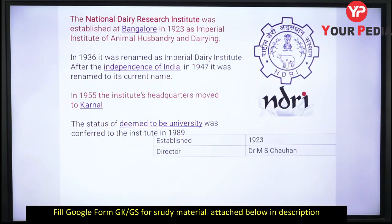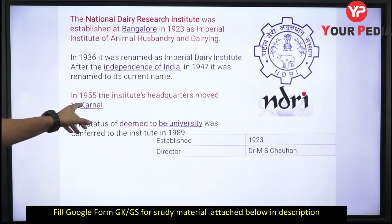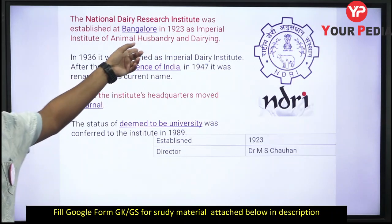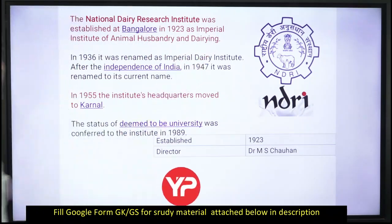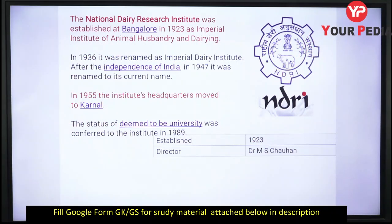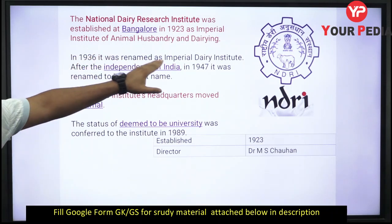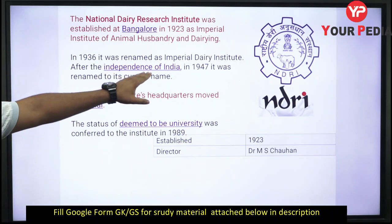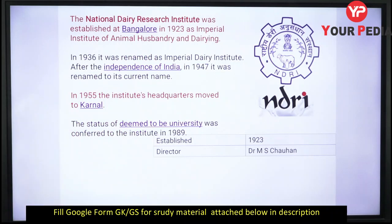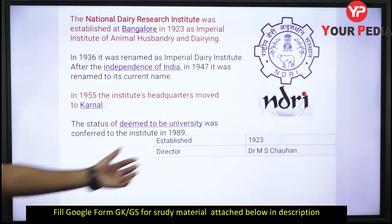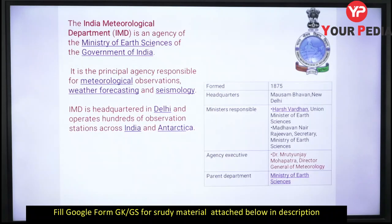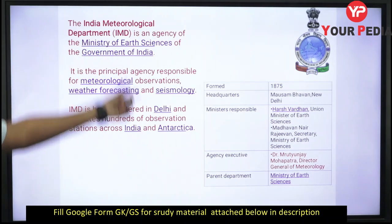National Dairy Research Institute — NDRI — is a very important institute. It is currently located in Karnal, Haryana. It was established in 1923 in Bangalore as the Imperial Institute of Animal Husbandry and Dairying. In 1936 it was renamed as the Imperial Dairy Institute, and after independence it was given the name NDRI. In 1955 its headquarters were moved to Karnal, Haryana. Its current Director is Dr. M.S. Shohan.